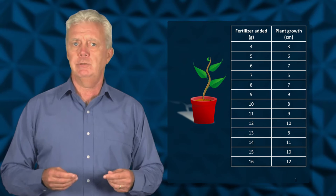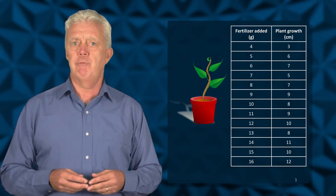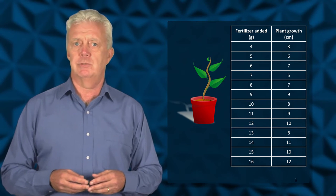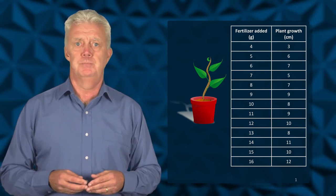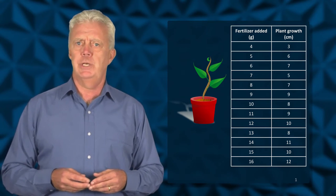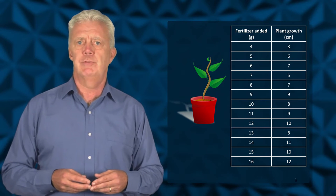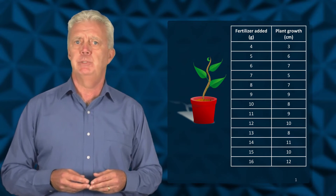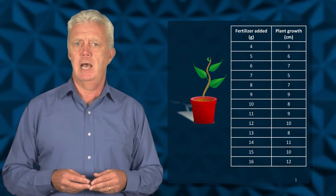We would conduct the experiment and record the results in a table. A scatter plot would help to show if there is a correlation between the amount of fertilizer added and growth.